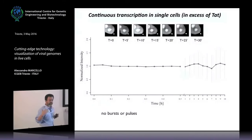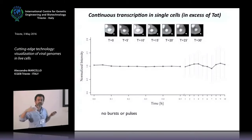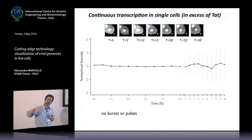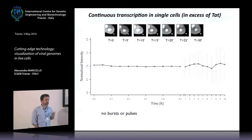Having validated the system, we wanted to look at it in time. The first thing we looked at was a time course of spot intensity — and this shows a flat line, basically no variation of intensity over time. This seems trivial, but in the field of transcription there is a lot of debate about bursts of transcription or transcriptional pulses. Transcription actually fluctuates up and down in a single gene in most cases. However, here we have something different: an excess of the TAT transactivator, a potent booster of transcription, which probably overcomes the appearance of pulses and bursts.